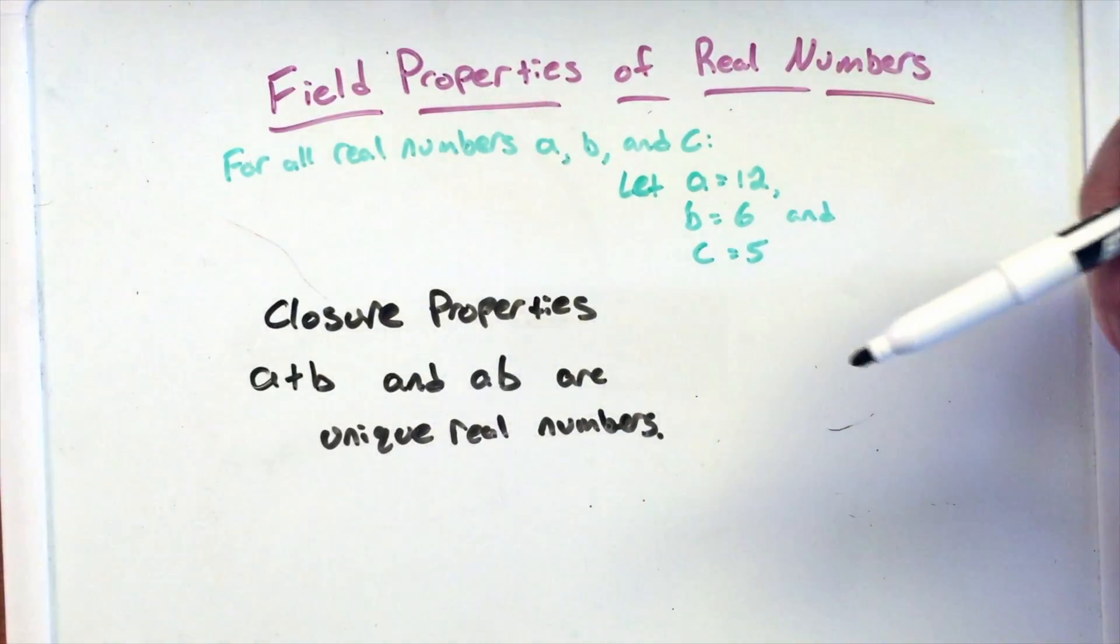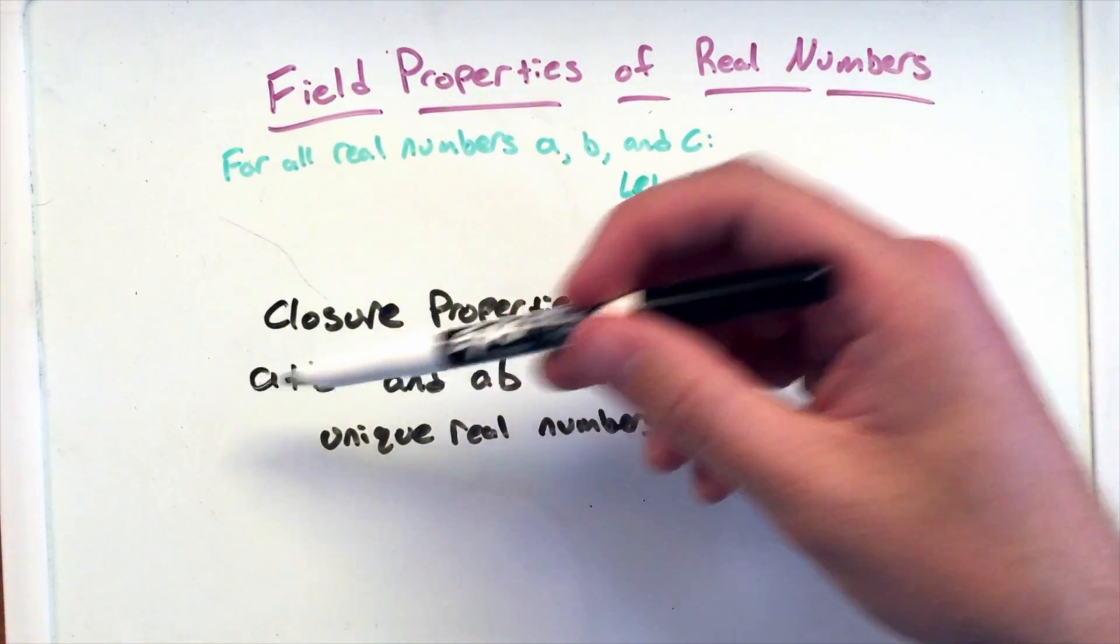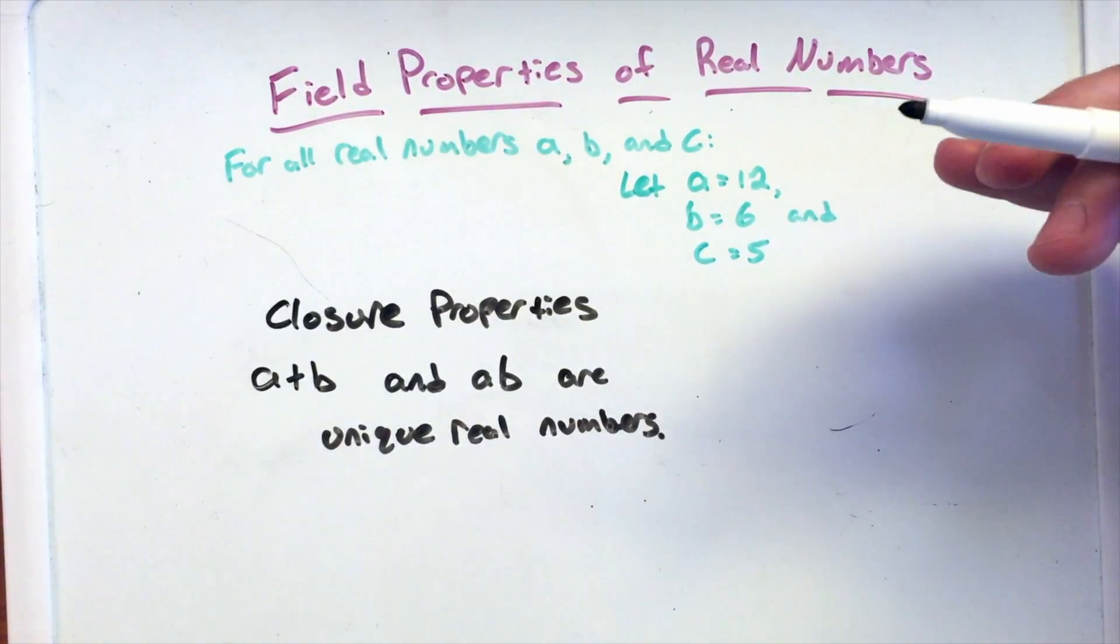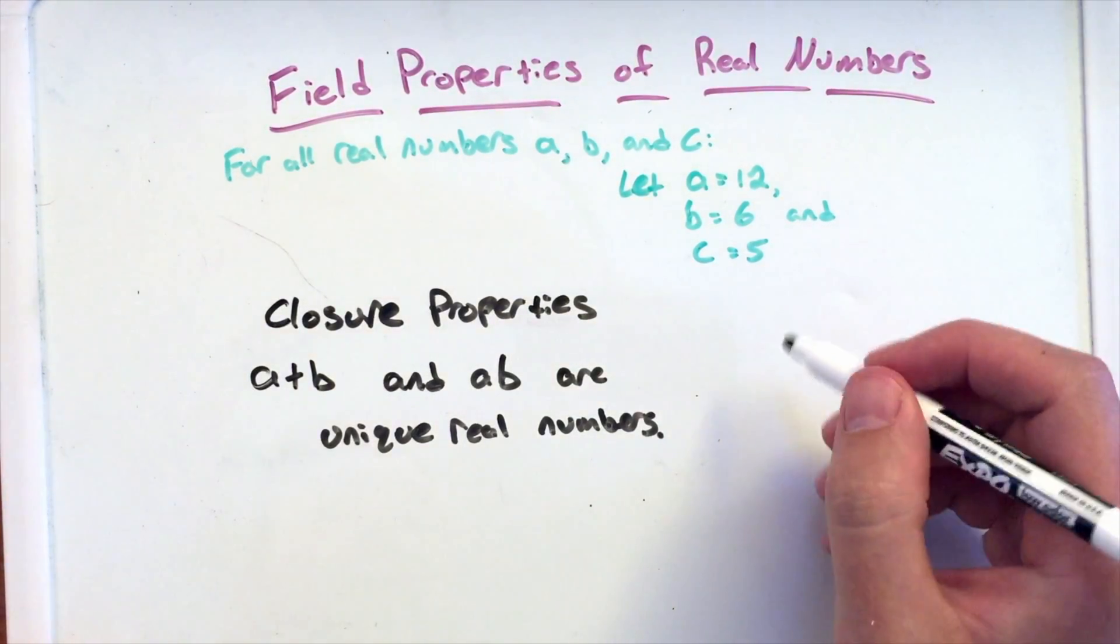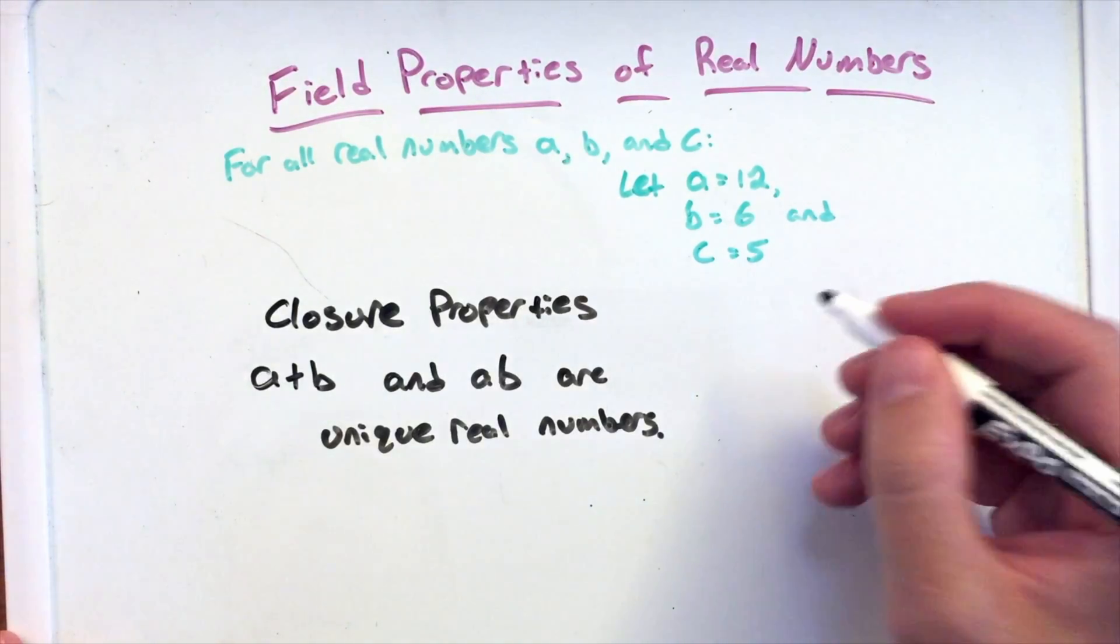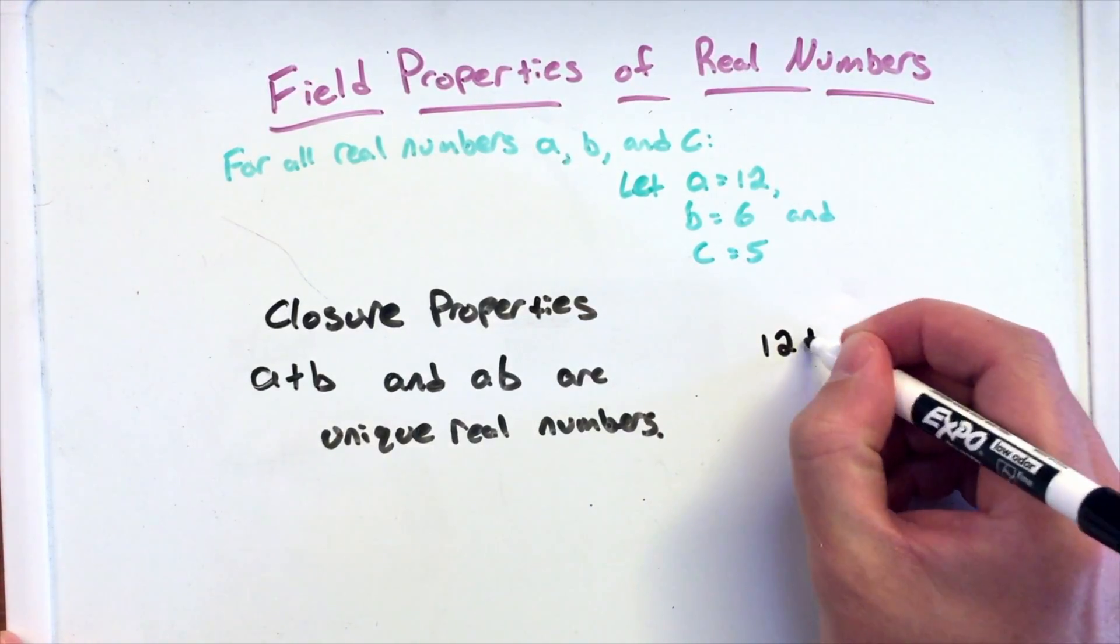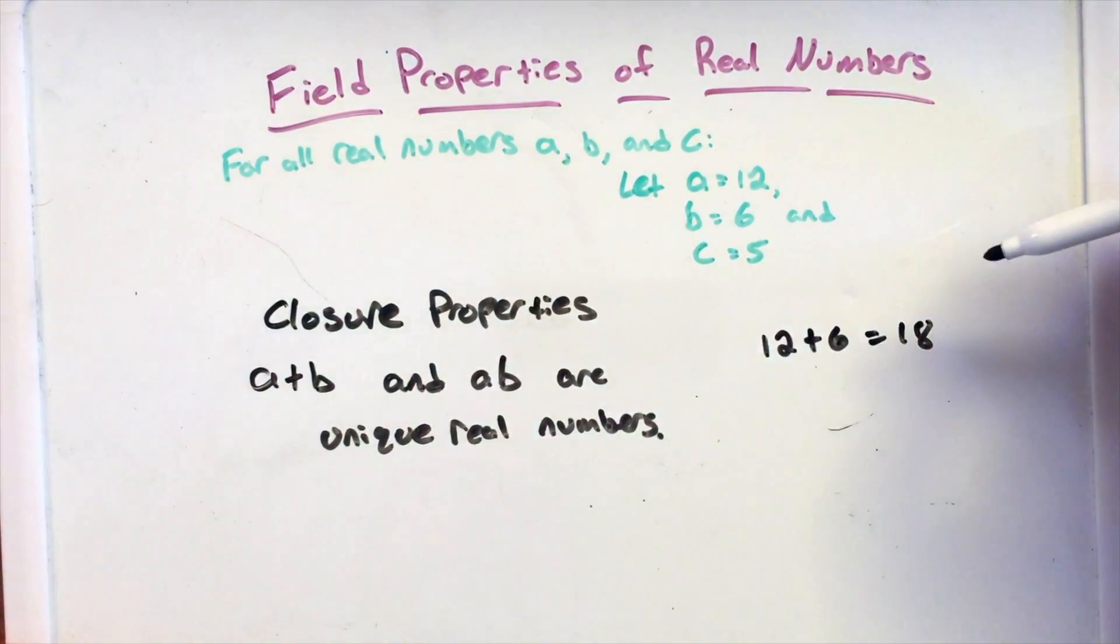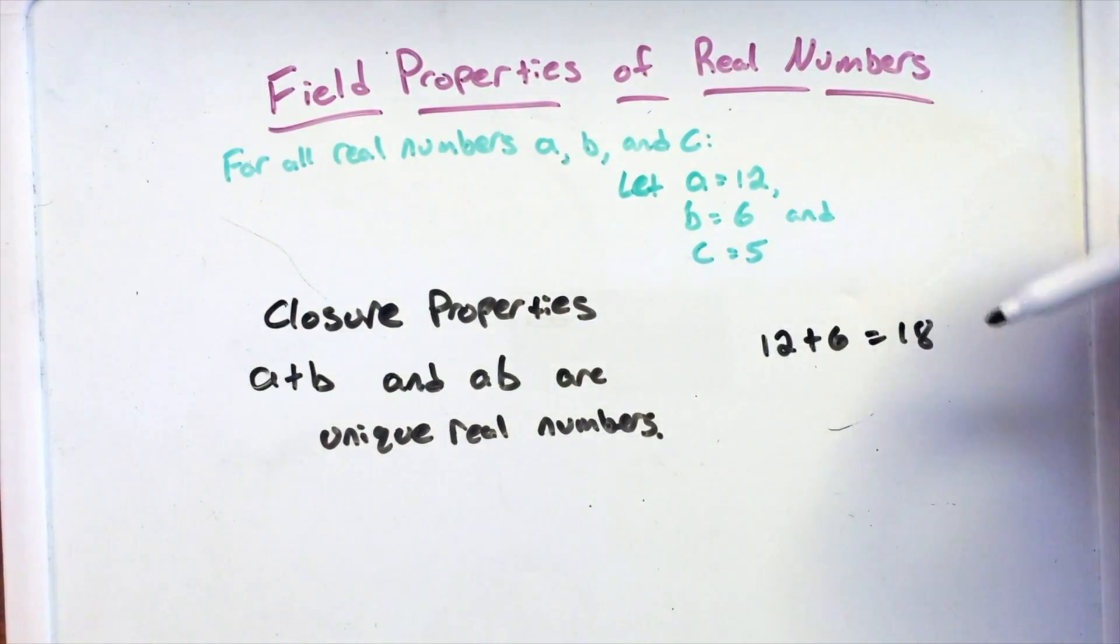So what does it mean to be a unique real number? That means when you add a and b, when you add them, you will only get one answer. So if we had a and b, 12 plus 6, that equals 18, and it will always equal 18. There's no other number it can be. It will always equal 18. It's a unique answer.